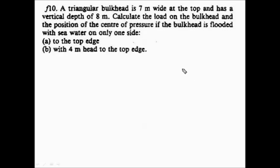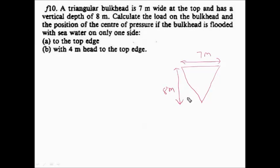Now we will move to the next numerical. In this problem, we have a triangular bulkhead — until now we have seen rectangular and trapezoidal bulkheads; now we see a triangular one. The bulkhead is 7 meters wide at the top and has a vertical depth of 8 meters. We must calculate the load on the bulkhead and the position of the center of pressure, with sea water on one side only.